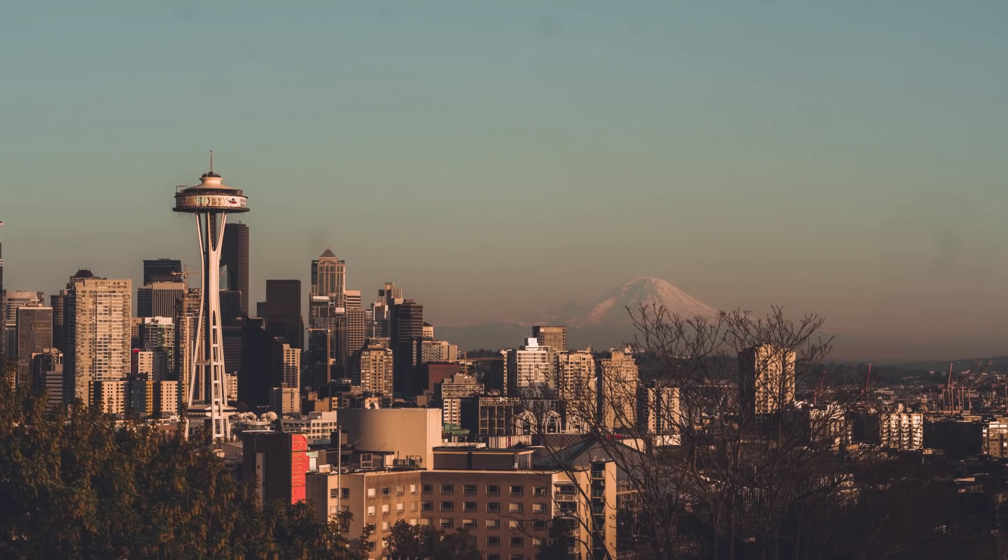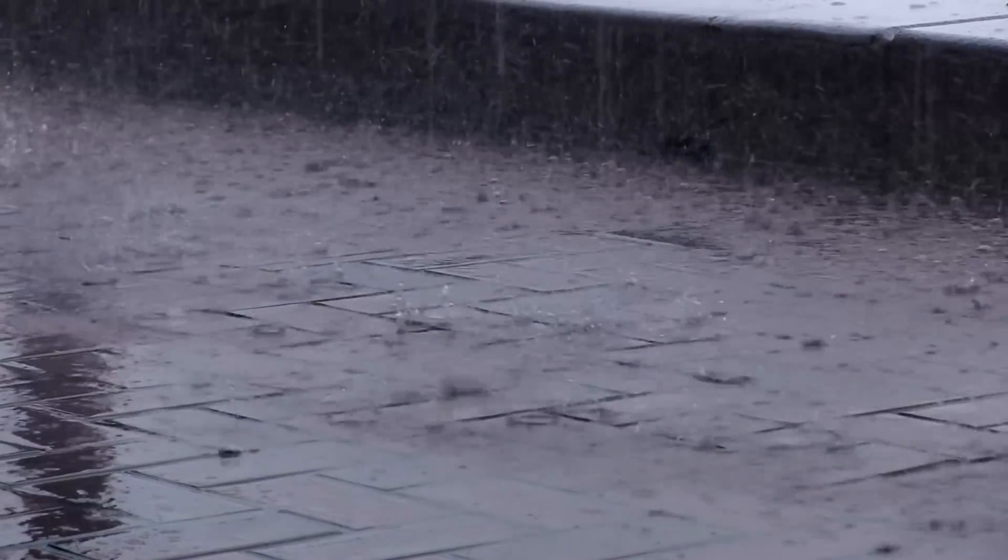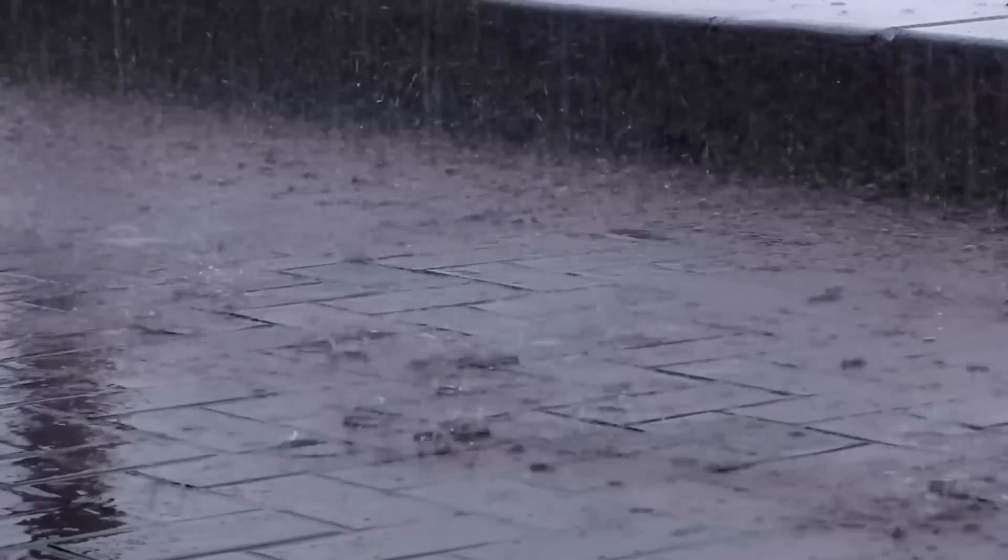For example, just to illustrate the intuition, if I tell you that in November in Seattle it's going to rain, people who live in Seattle know that I haven't actually reduced much uncertainty. It always rains in Seattle, so that's not a very informative statement.